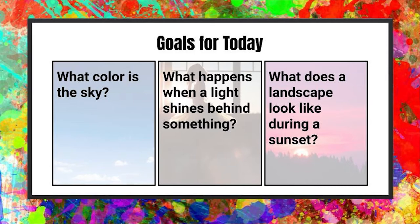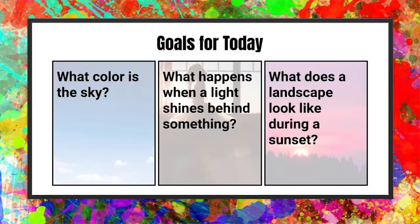We've got three goals today. Number one, we need to know what color the sky is — it's not what you think. Number two, we need to know what happens when light shines from behind something. And number three, we need to know what a landscape looks like at sunset.